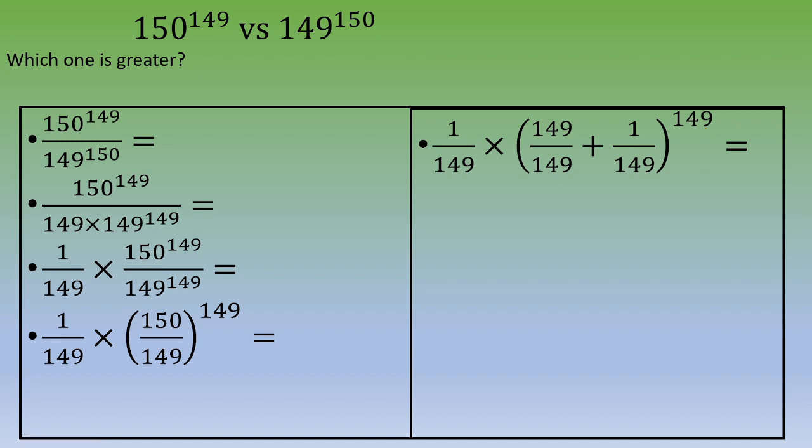Now you do the math. This is 1 over 149 times 149 divided by 149, which is 1 plus 1 over 149, all raised to power 149.